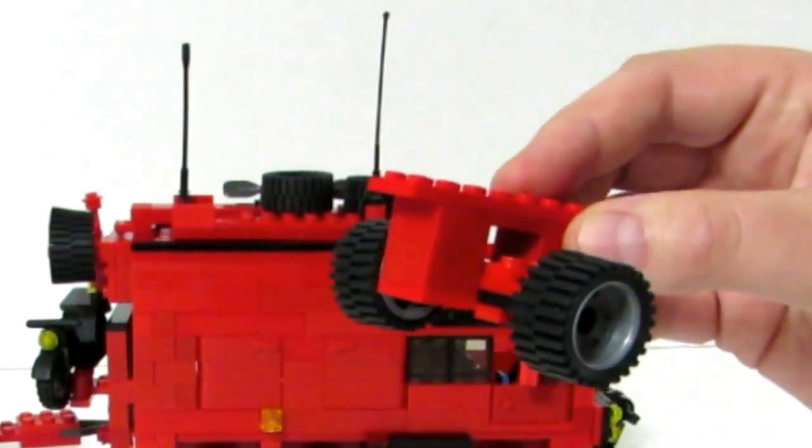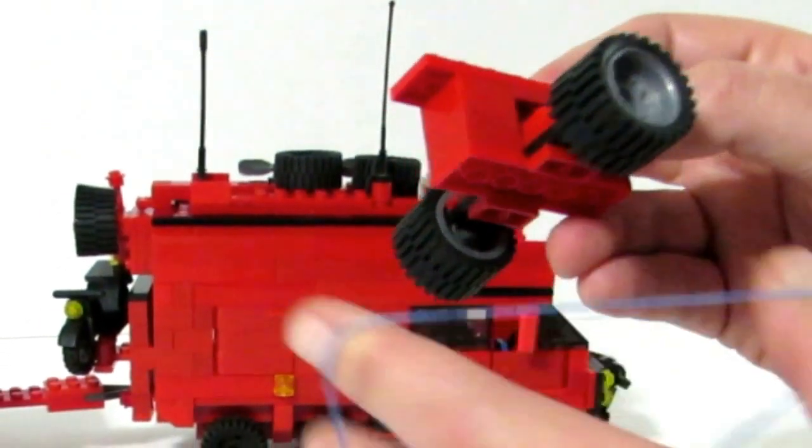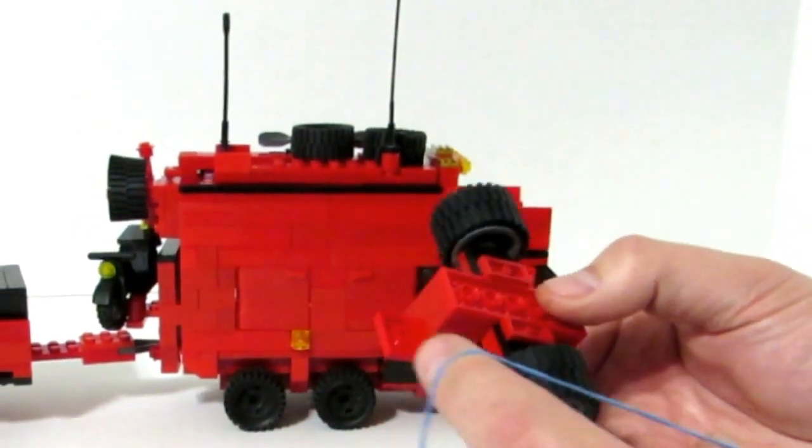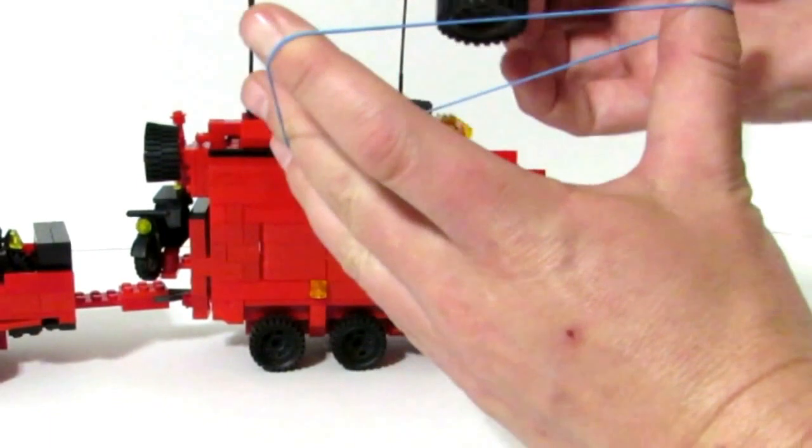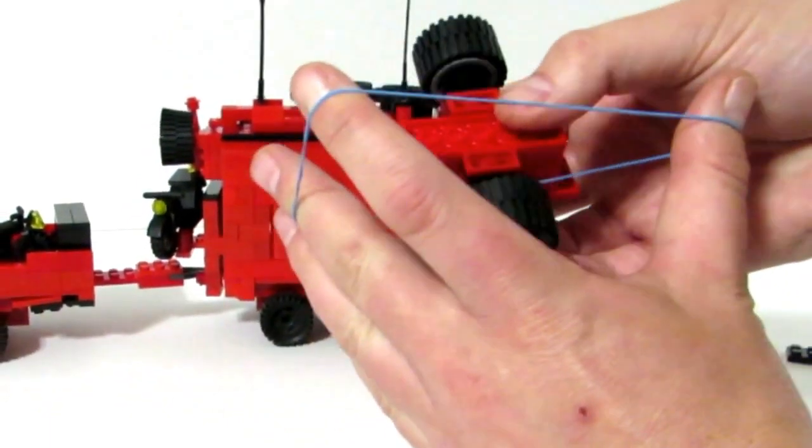To get the suspension functionality we have a rubber band here and you're going to have to experiment with the rubber bands. I know with this particular rubber band it takes two, but how you want to do it is you just go over the outside and in.